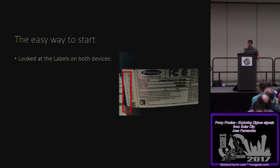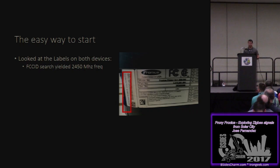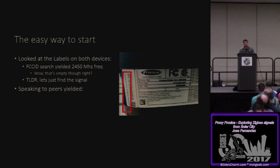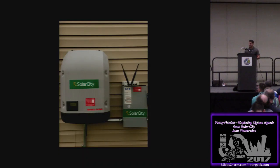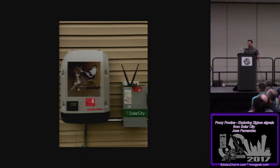The easiest way to start — like most things — without taking a screwdriver to it, is to look at the labels. I had two devices, so I looked at the label for what was outside. There's an FCC ID number there. When you do a search for that, it's in the 2.450 GHz range. It's an unlicensed frequency, so a lot of devices operate in those channels. I started speaking to some peers — 'what's the best way to approach this?' — and I was told: 'just put a USRP on it.'